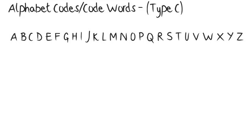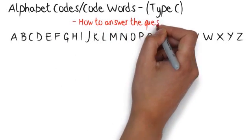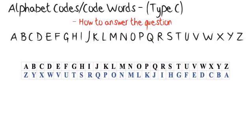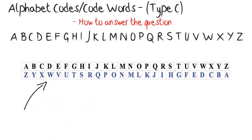After you have the link between the word and the code, the question will ask you to code another word using the same method, or decode a word to find the original. To answer the question, write down the code underneath the word with space in between for the rule, then look at the alphabet and see if you can see any patterns that appear between the letters of the word and the letters of the code.